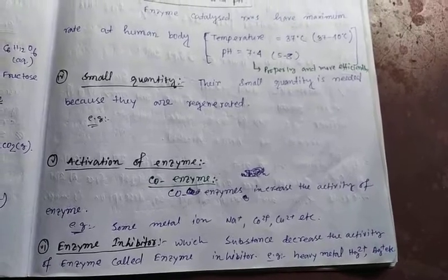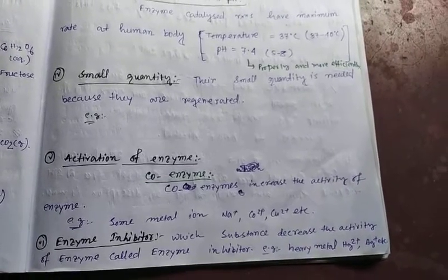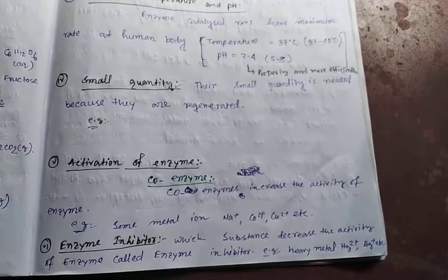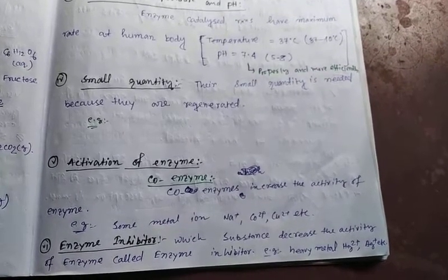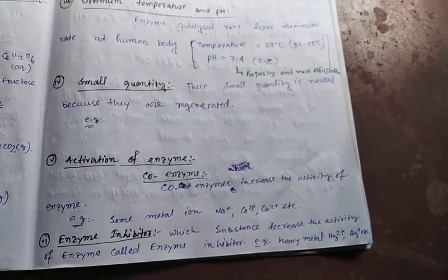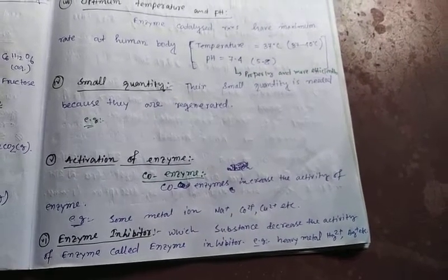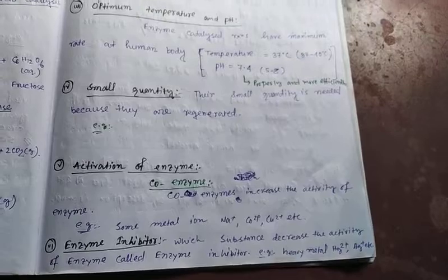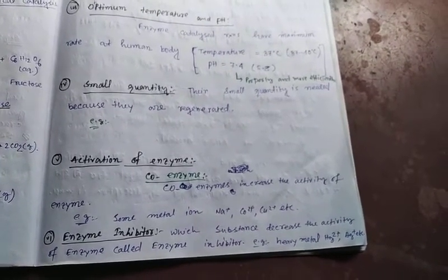This is the enzyme inhibitor. An enzyme inhibitor is a molecule that reduces or stops the activity of an enzyme.